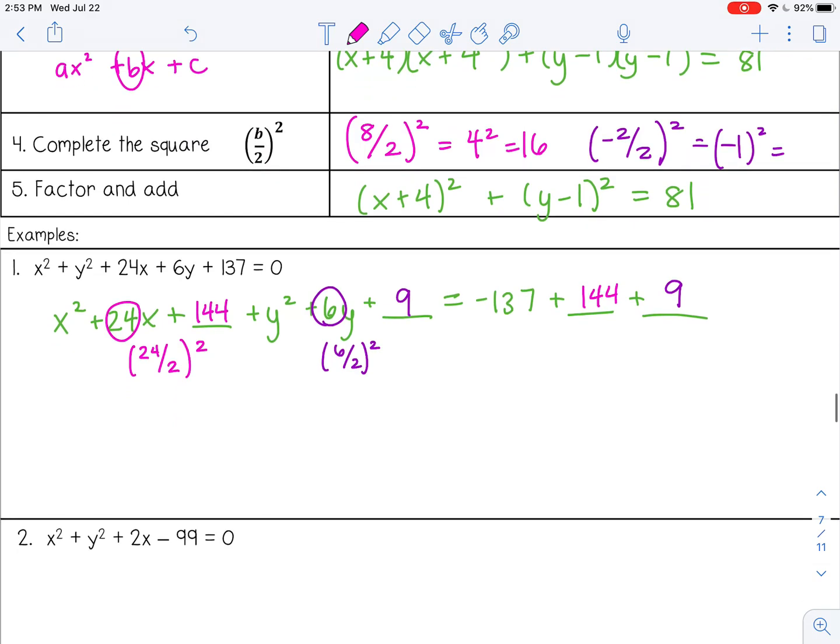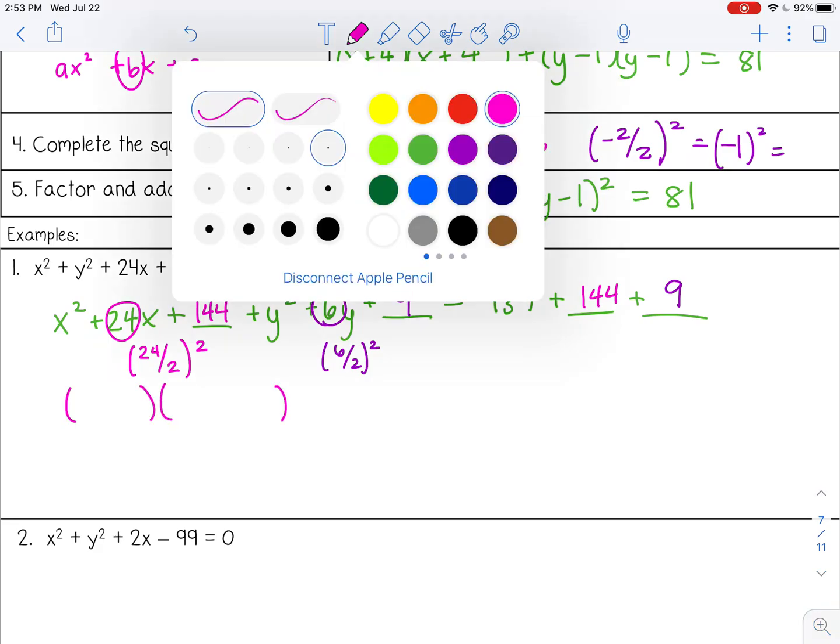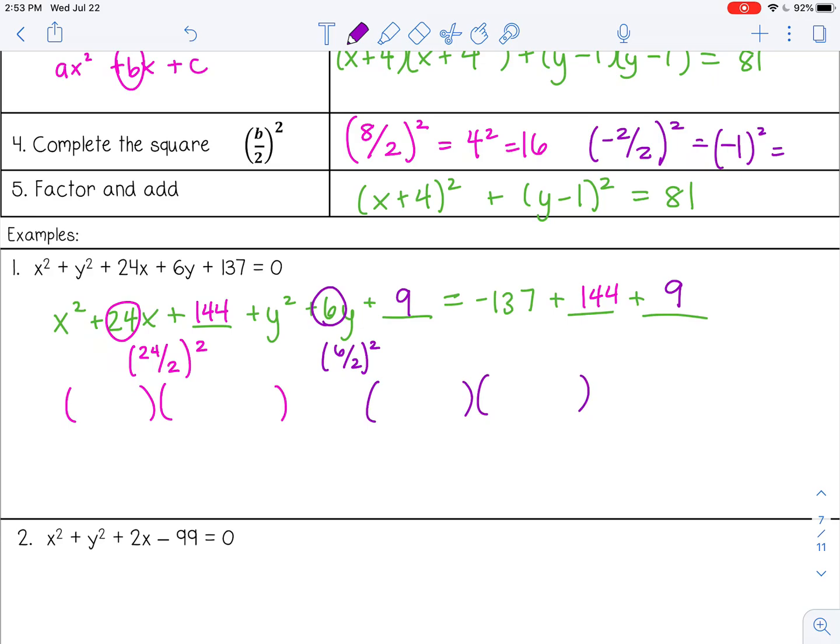Now we need to factor. An easy quick tip for factoring these: you can write out your two binomials. We know it has to be the same number because it's a perfect square trinomial. We made it that way when we completed the square. So we're looking for a number that multiplies by itself to give us 144 but adds together to give us 24, and you should have thought of 12. Here is the quick tip: the number here will always be half of your b. So the number here and here will always be half of your b.